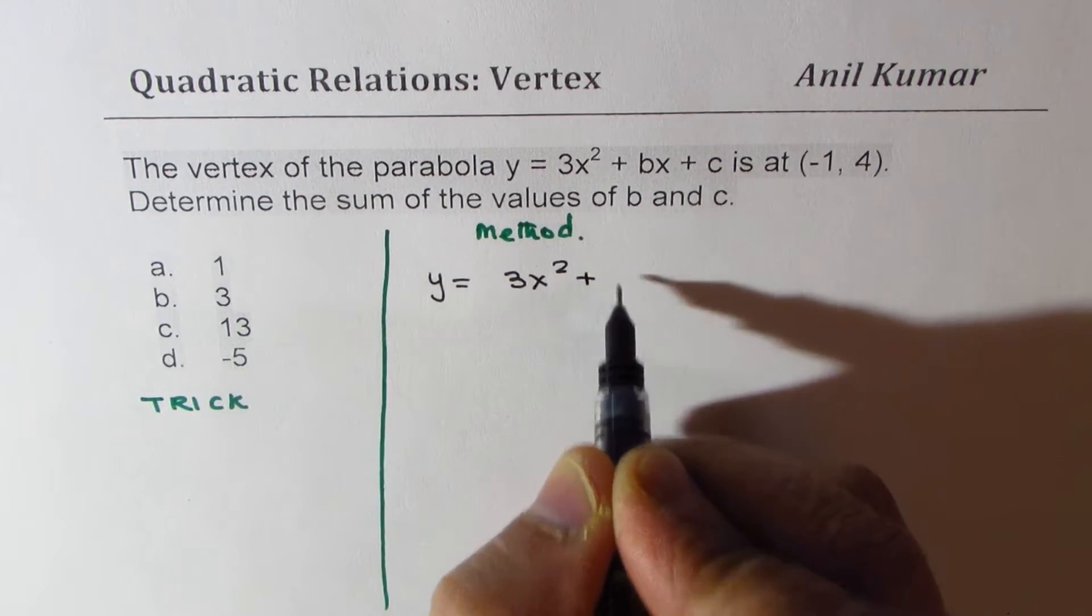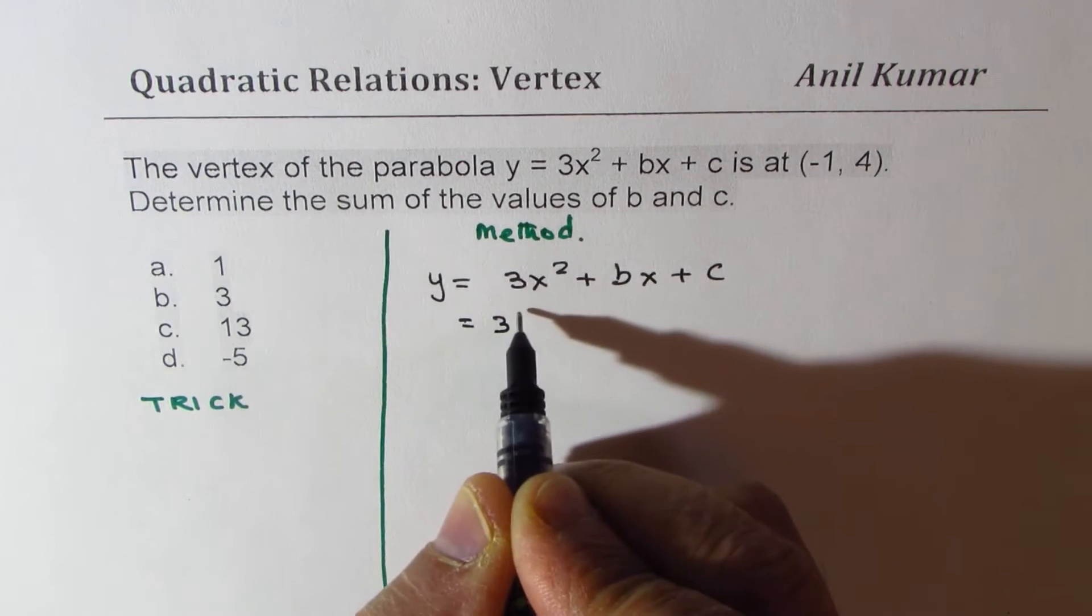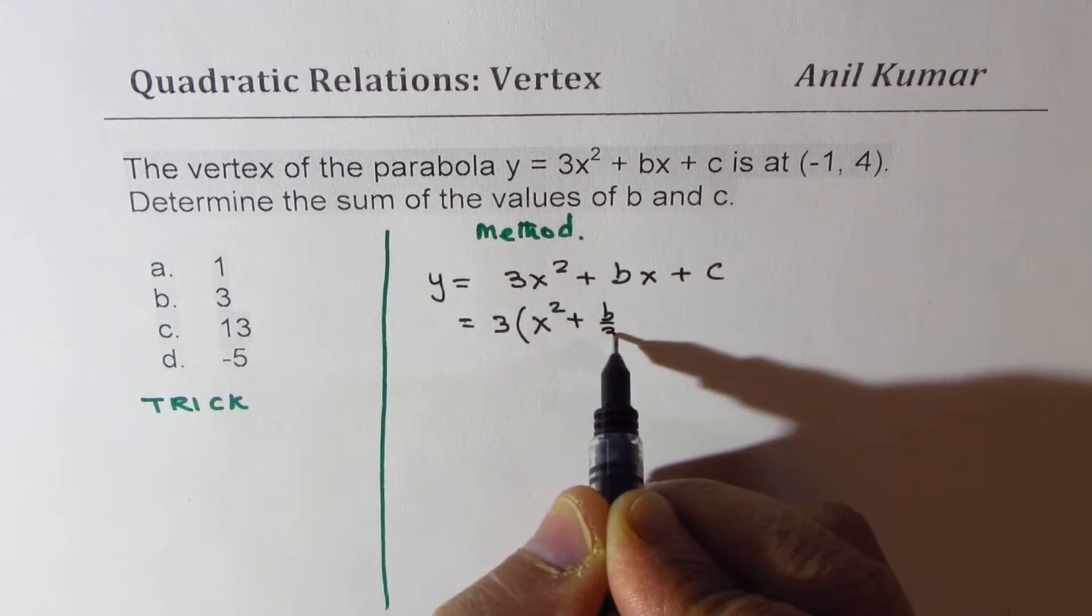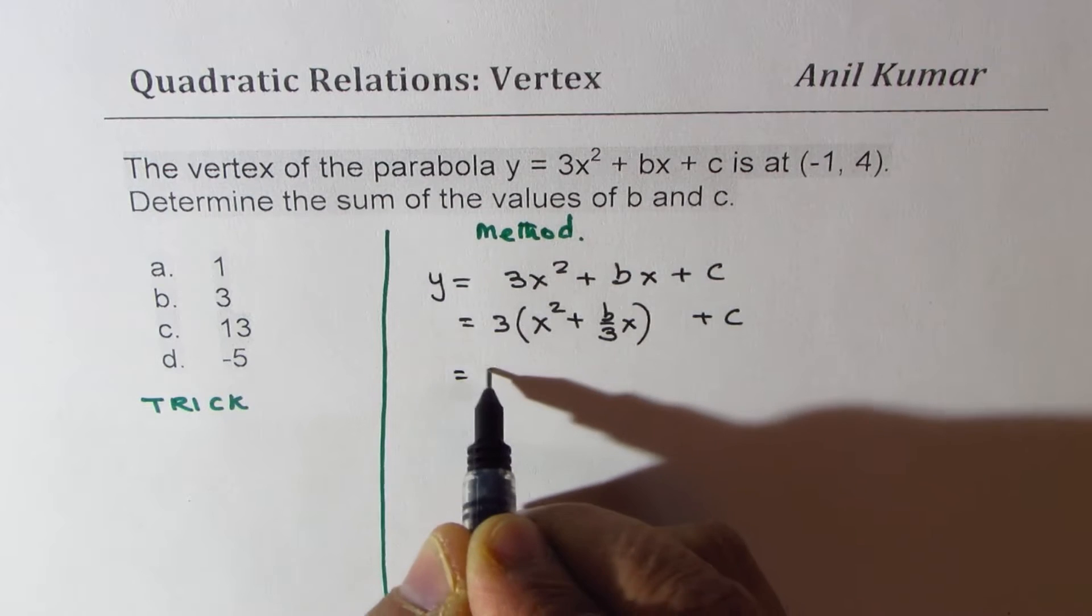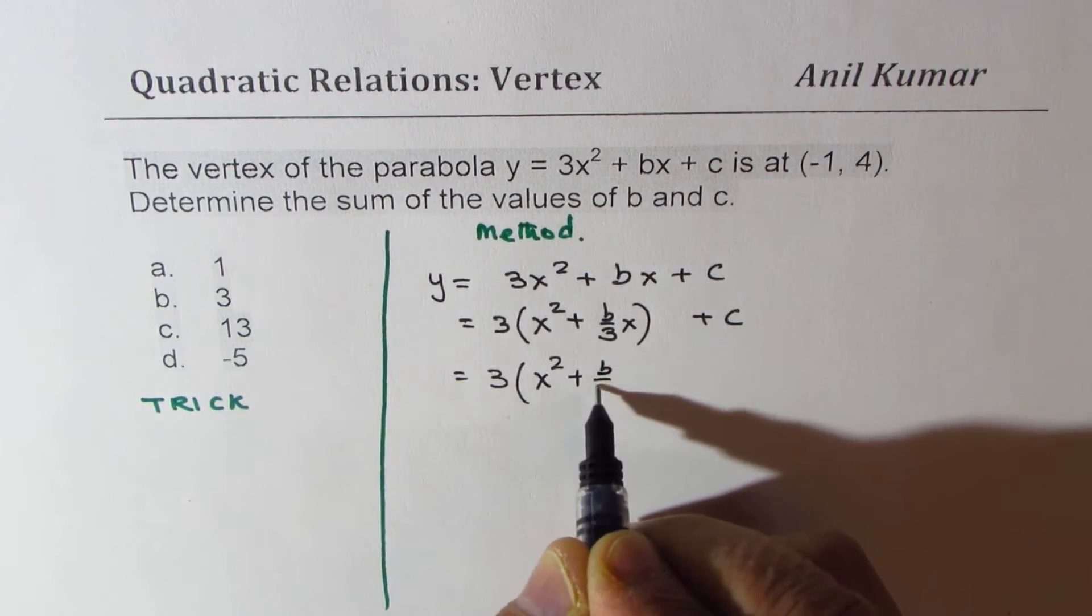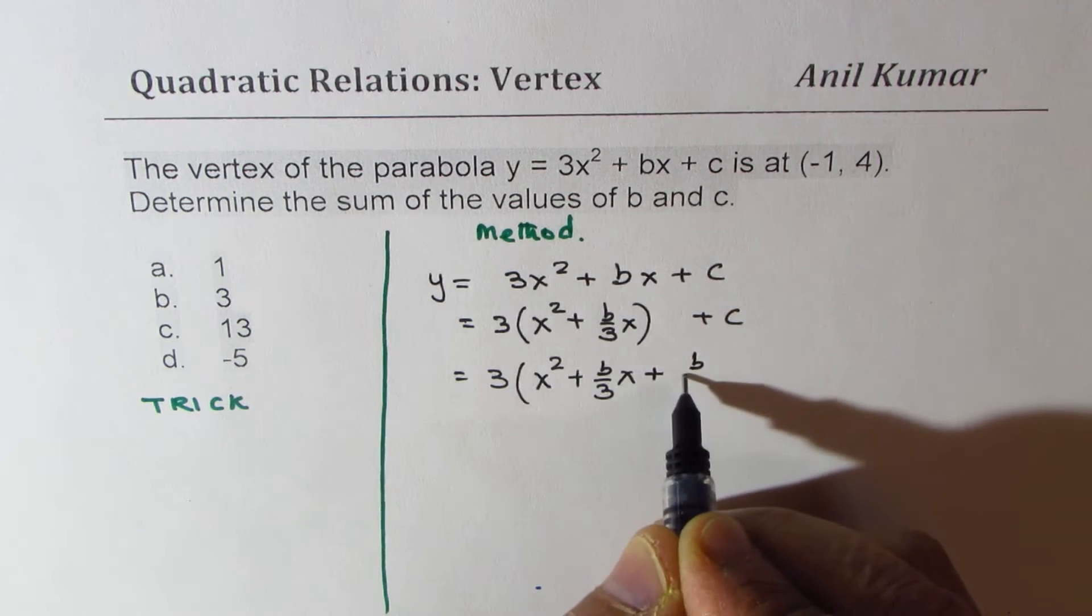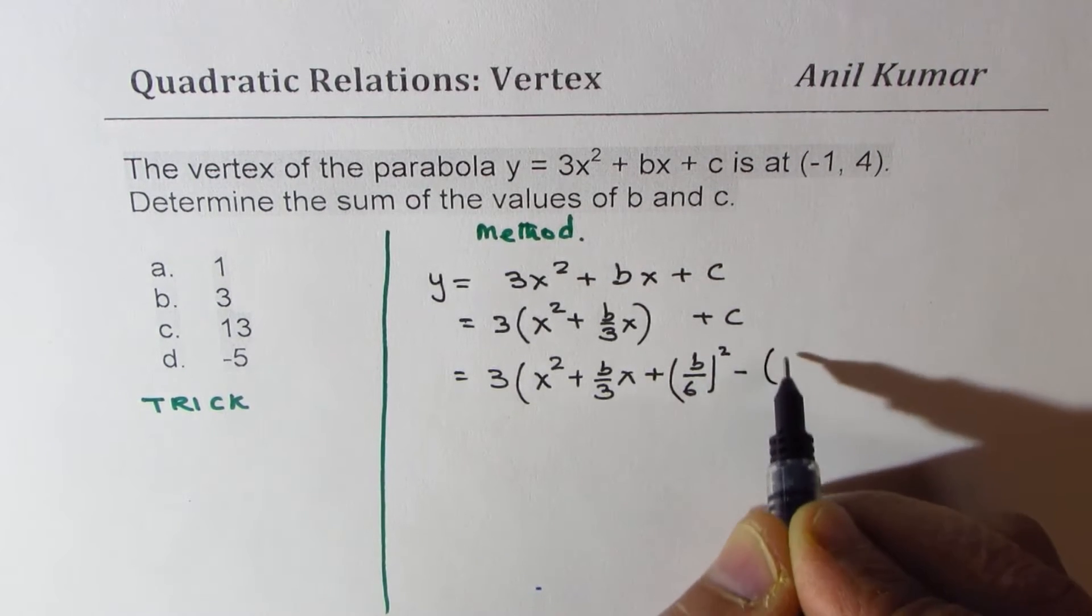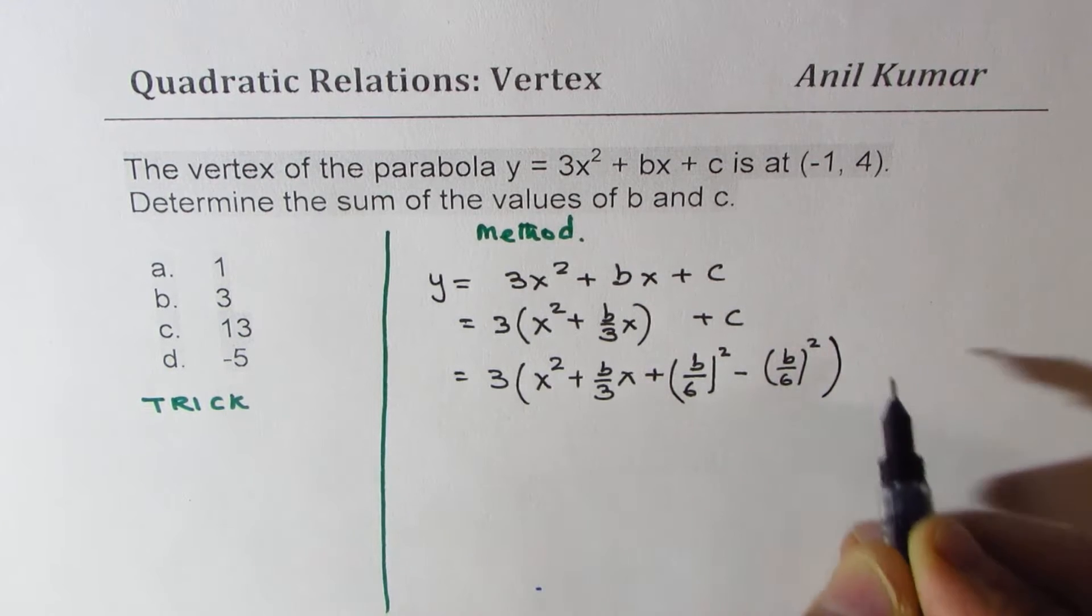We have 3x squared plus bx plus c. Complete the squares by taking 3 common. So we get b over 3x. Keep c aside. And then we have to add and subtract half of this. We get x squared plus b over 3x plus half of b over 3 is b over 6. Add square of this and also subtract square of this, plus c.